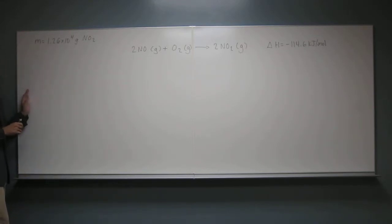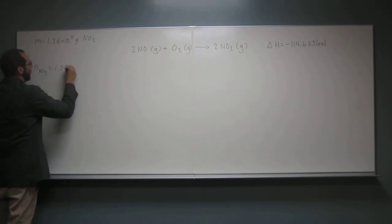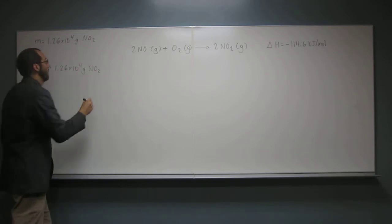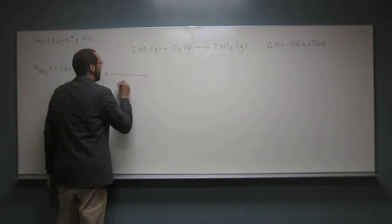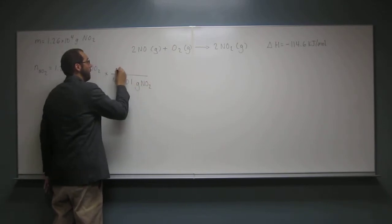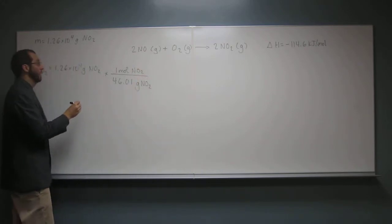So remember we talked about that? So to figure out the number of moles of NO2, that's what we do. We got 1.26 times 10 to the fourth grams of NO2. So that's where we start out. But you said, what did we have? 46.01. 46.01 grams of NO2 for every one mole of NO2. Does that make sense? Yes.